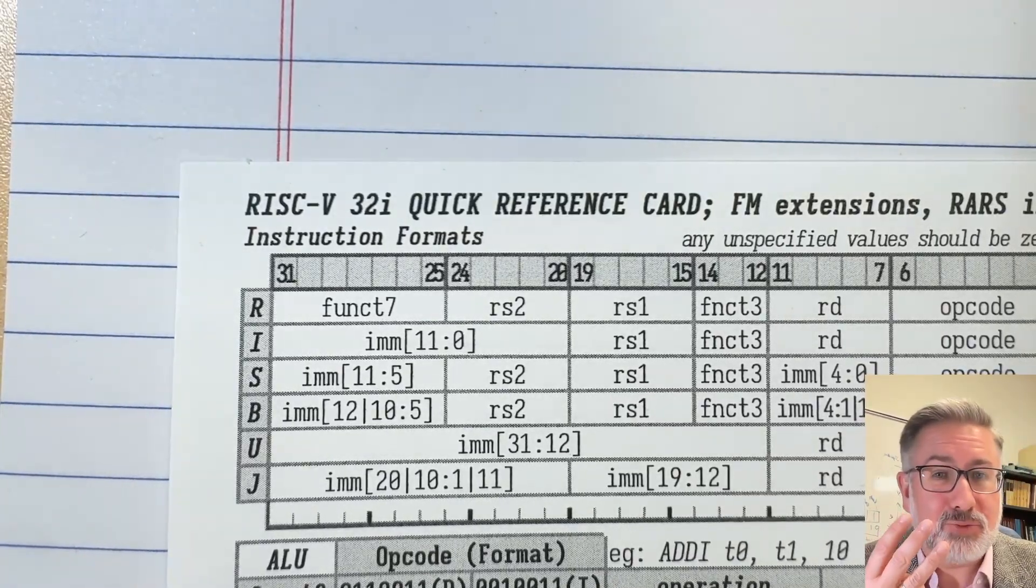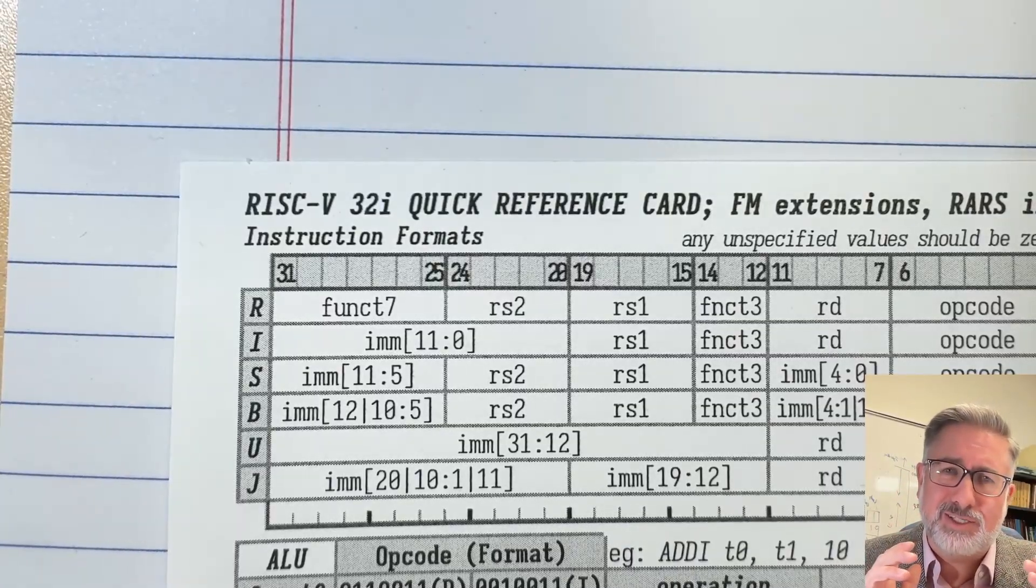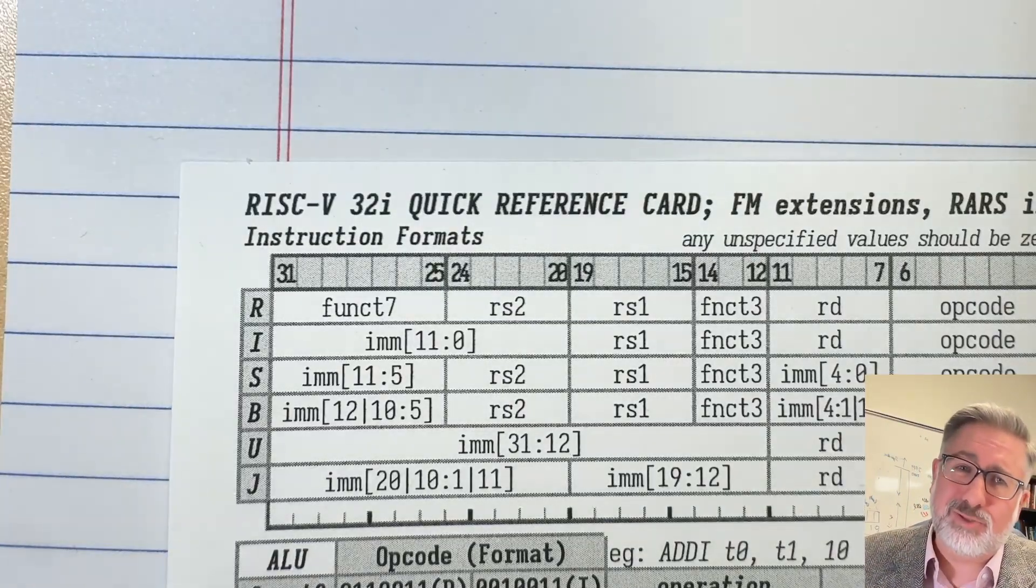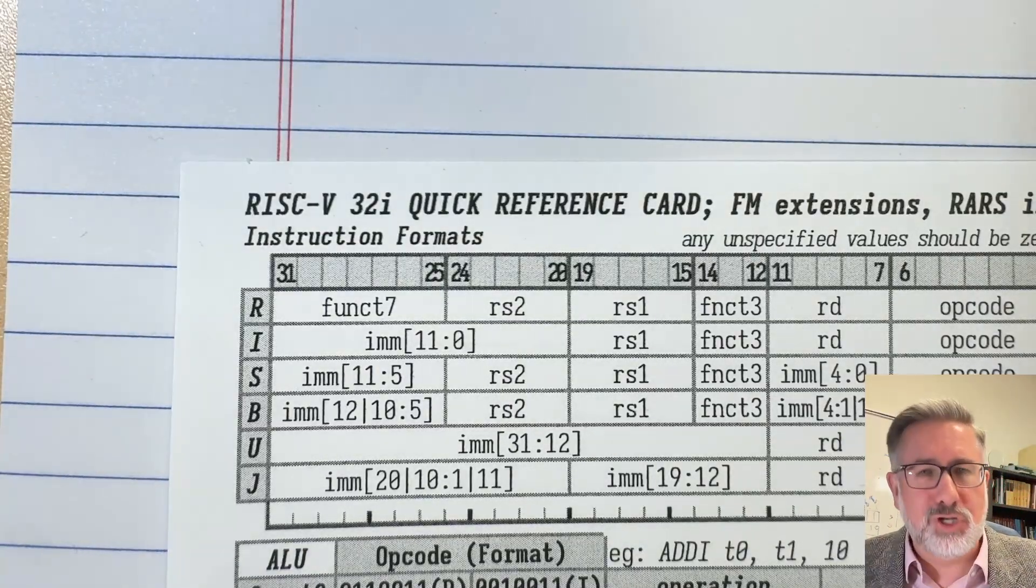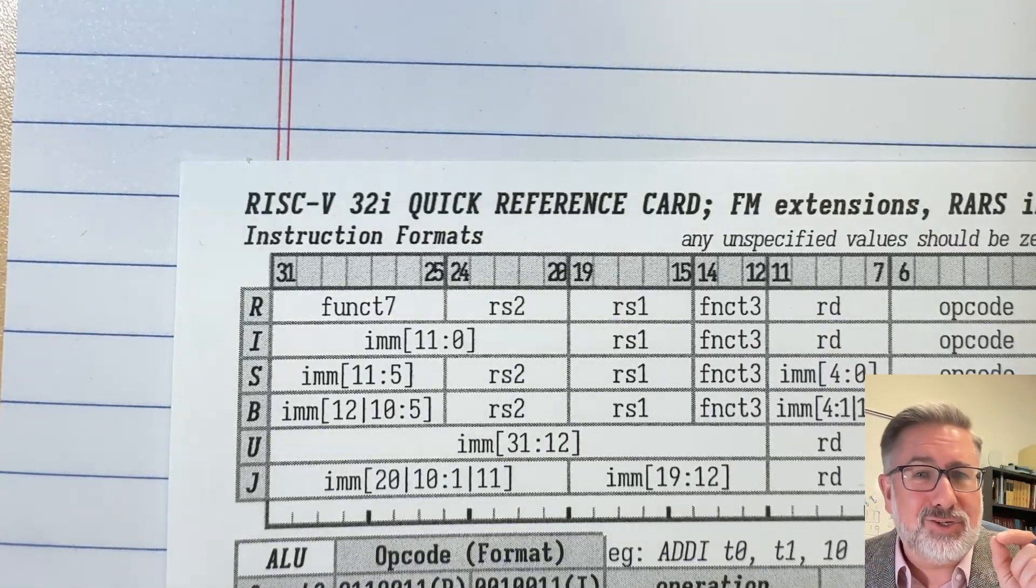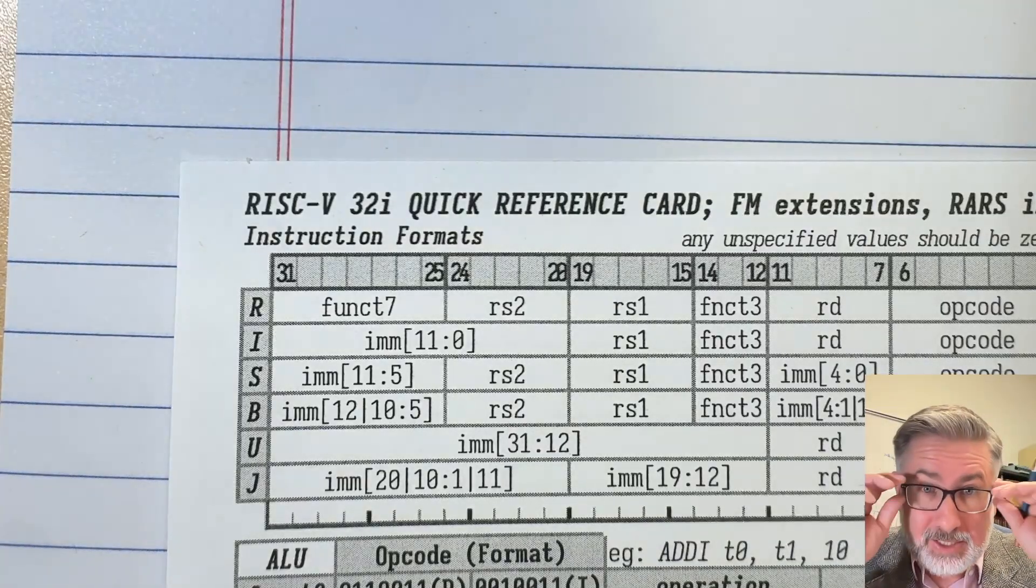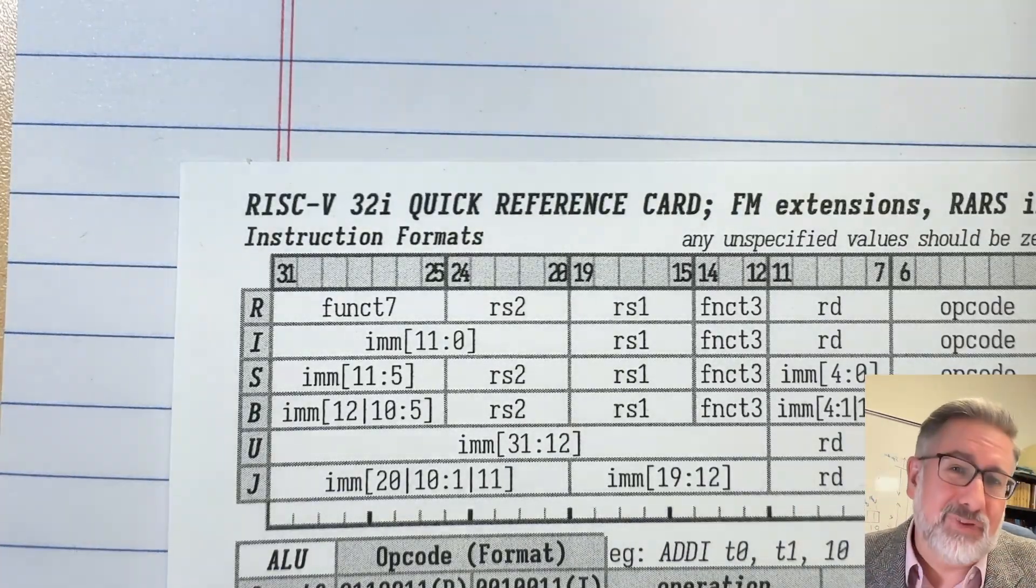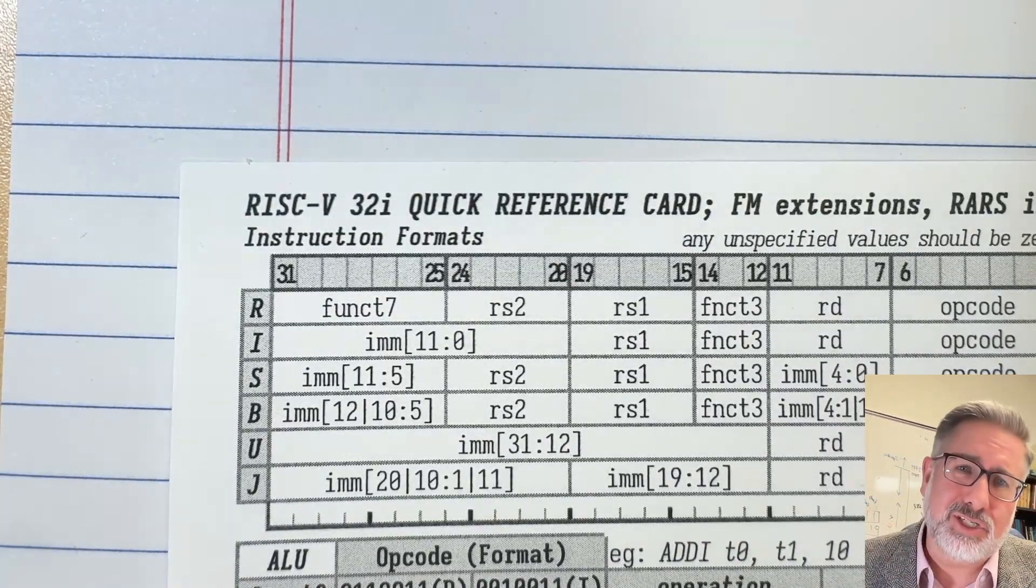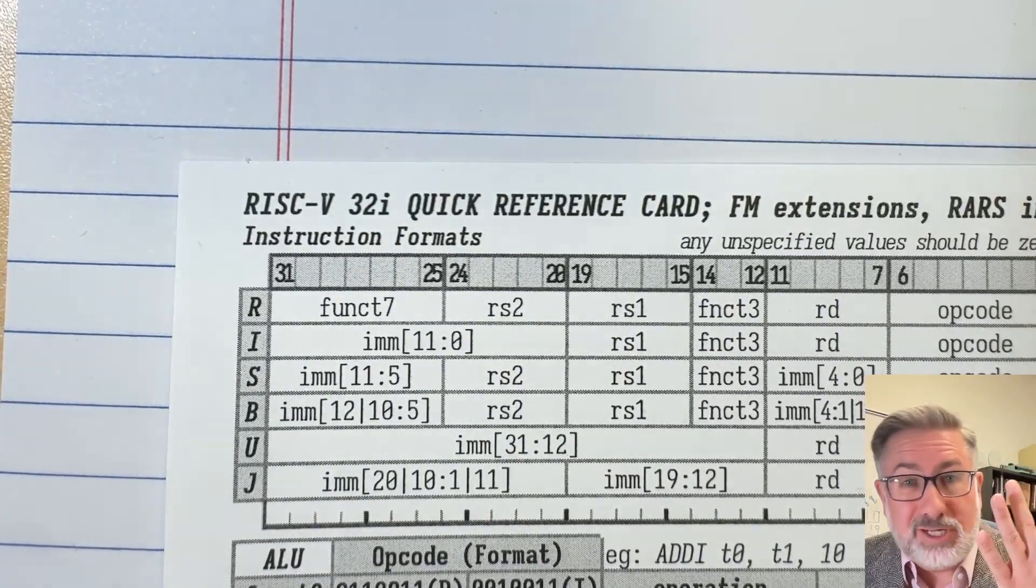X86 is a bit different because it allows you, in some circumstances, to operate on memory directly, which in the olden, olden, olden days was fine. Today is a huge no-no because cache and a million things between memory and registers mean that if you want to add a number to a value that's in memory, there's a whole bunch of other stuff we have to think about. But broadly speaking, for reduced instruction set languages like RISC and ARM and MIPS and everything else, those three categories apply.